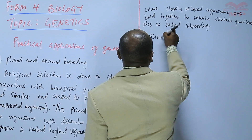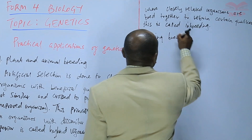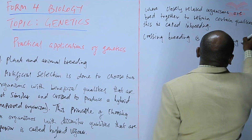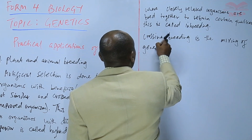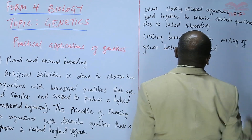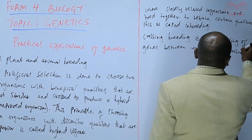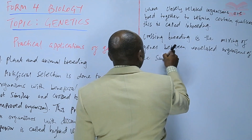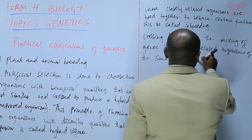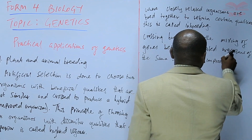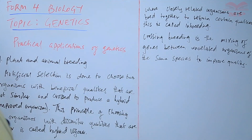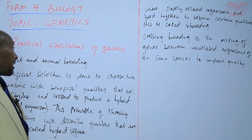On the other hand, we have crossbreeding. This is the mixing of genes between unrelated organisms of the same species to improve quality. That is one of the areas where genetics can be applied — in plant and animal breeding — and the same can be done for both plants and animals.